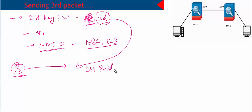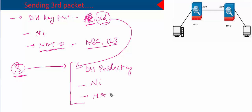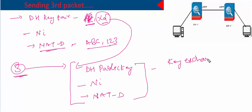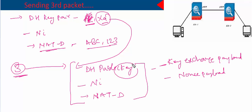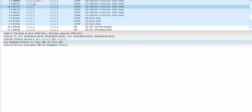In the third packet, the initiator sends the Diffie-Hellman public key only — keeping the private key to itself. It sends the initiator nonce value and the NAT-D values. If you open the packet in Wireshark, you will see two payloads: one is the key exchange payload and the other is the nonce payload. In the key exchange payload it sends the Diffie-Hellman public key, and in the nonce payload it sends the initiator nonce value.